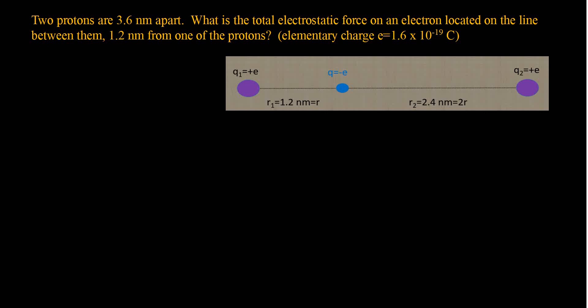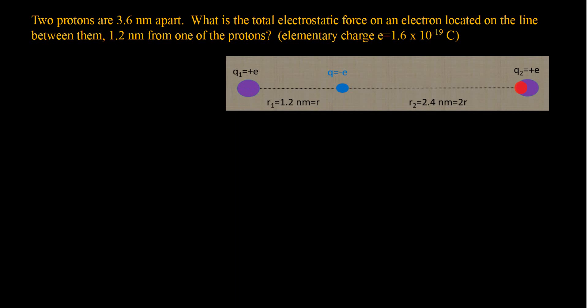In this video I will be discussing two examples about Coulomb's law. The first one involves two protons that are 3.6 nanometers apart — q1 and q2, both with positive charges. The question asks for the total electrostatic force on an electron located on the line between them, at exactly 1.2 nanometers from one of the protons. The electron can be placed on either side as long as it's between the two protons at that distance.